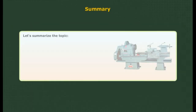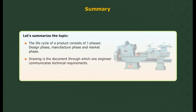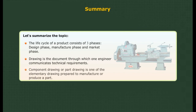Summary: the life cycle of a product consists of three phases — design phase, manufacture phase, and market phase. Drawing is the document through which one engineer communicates technical requirements. Component drawing or part drawing is one of the elementary drawings prepared to manufacture or produce a part.